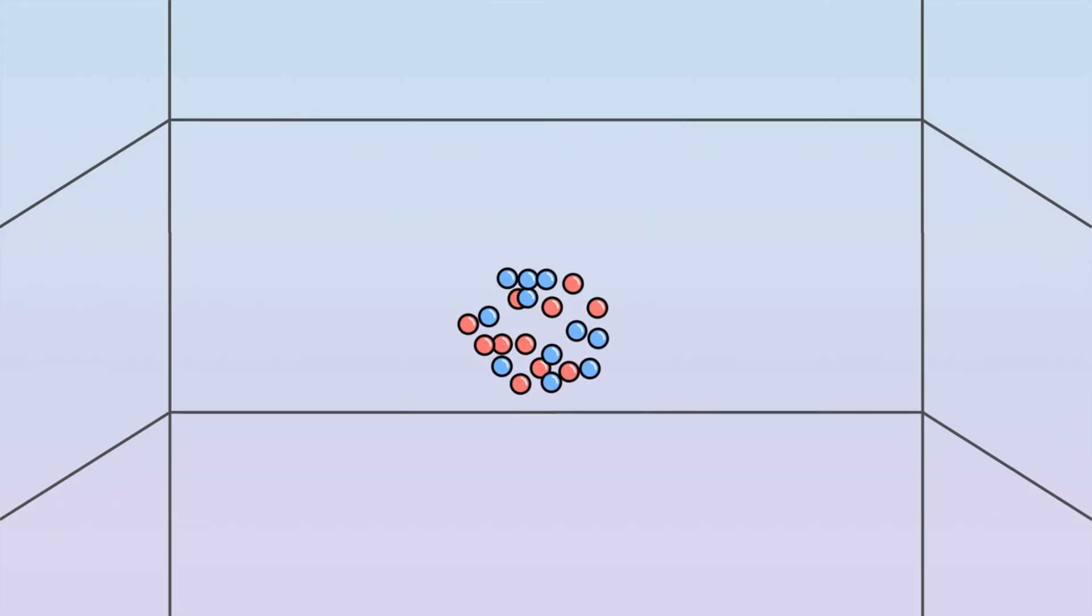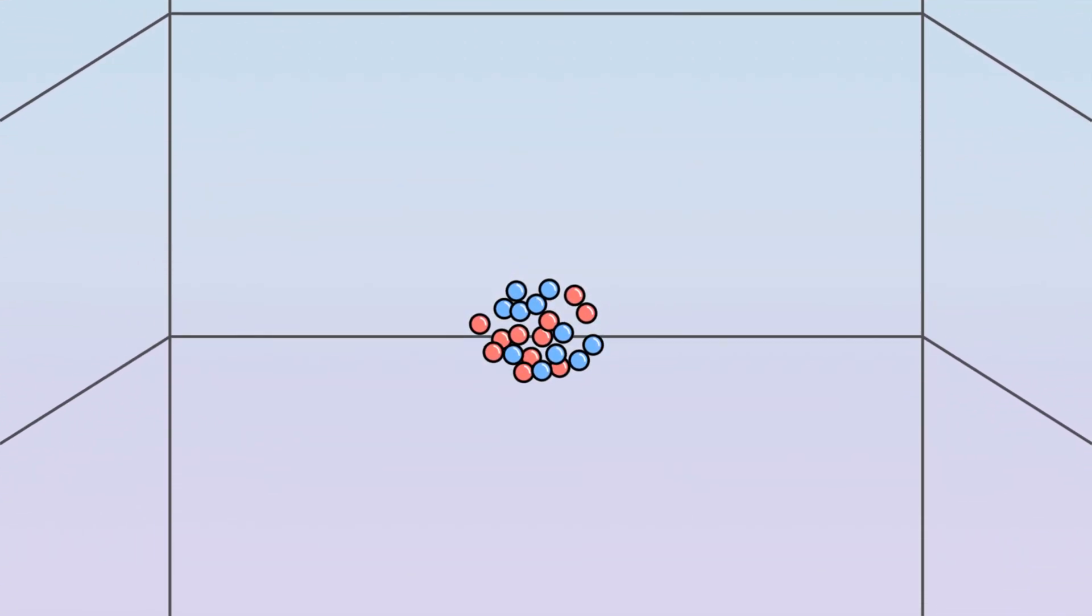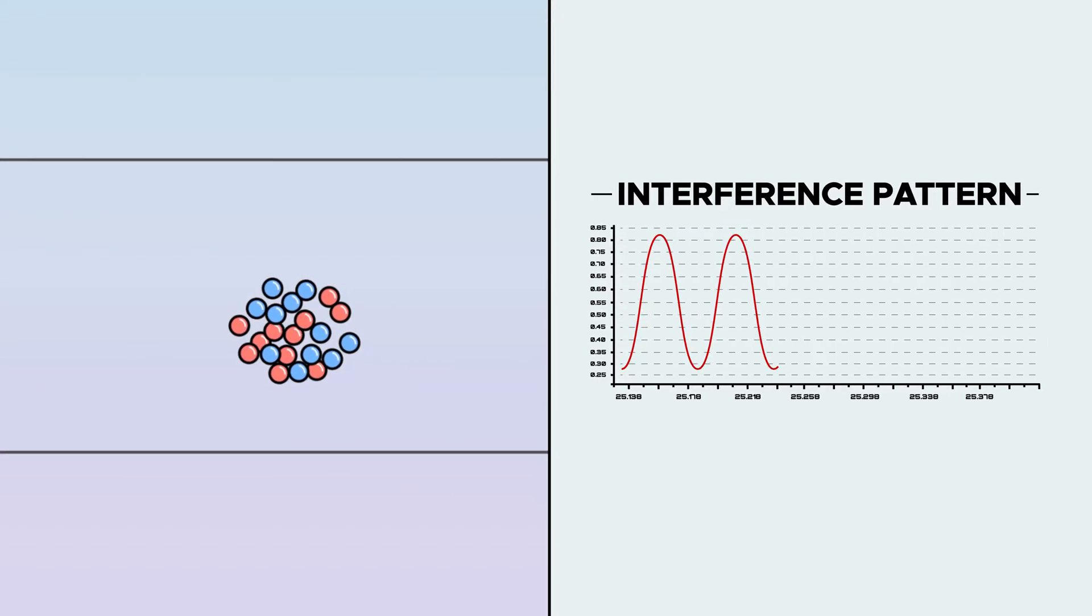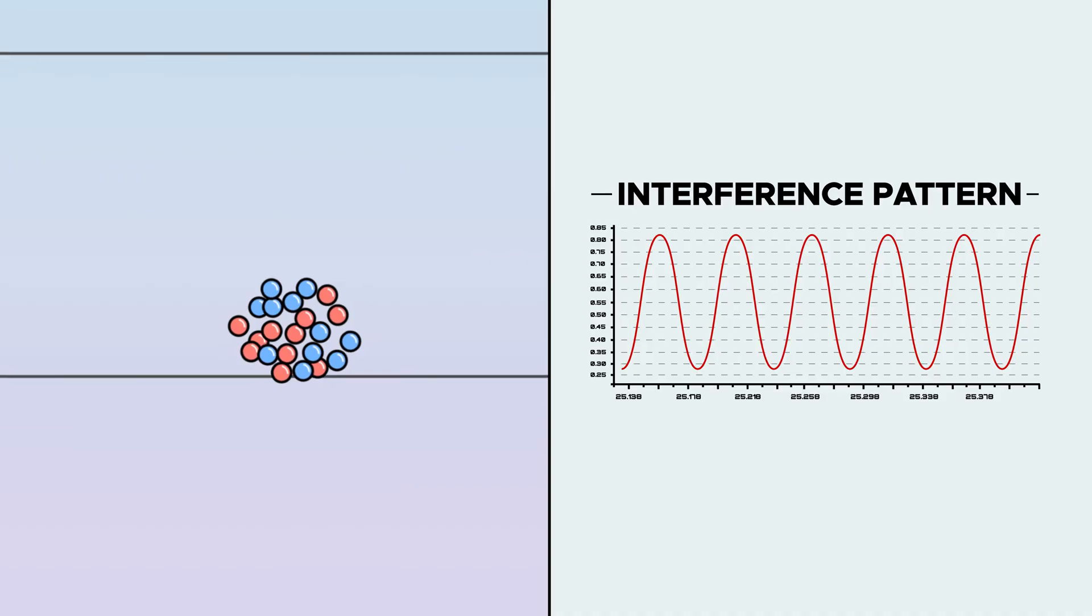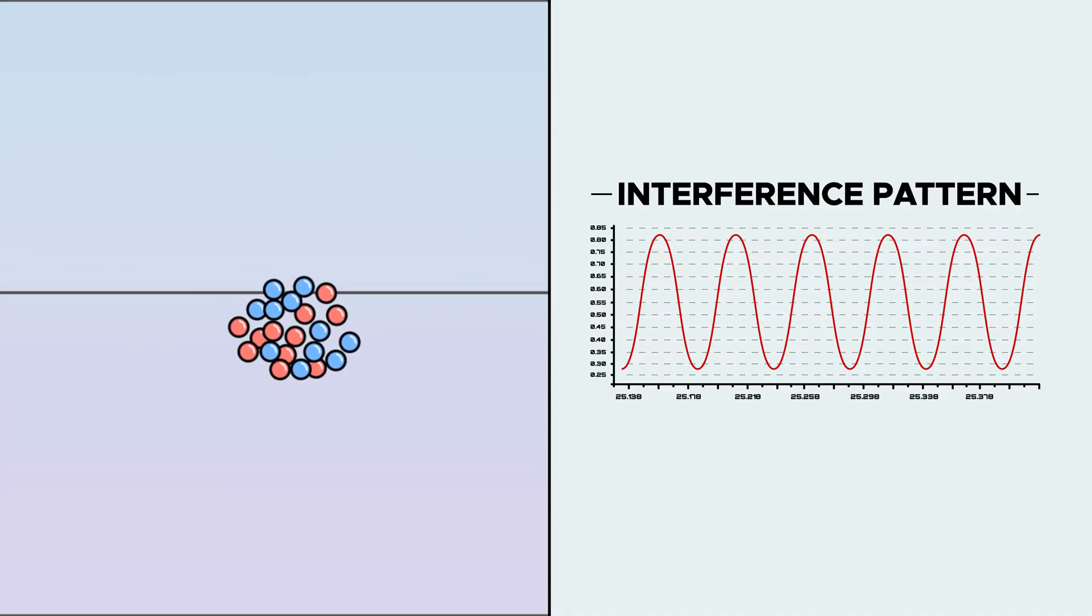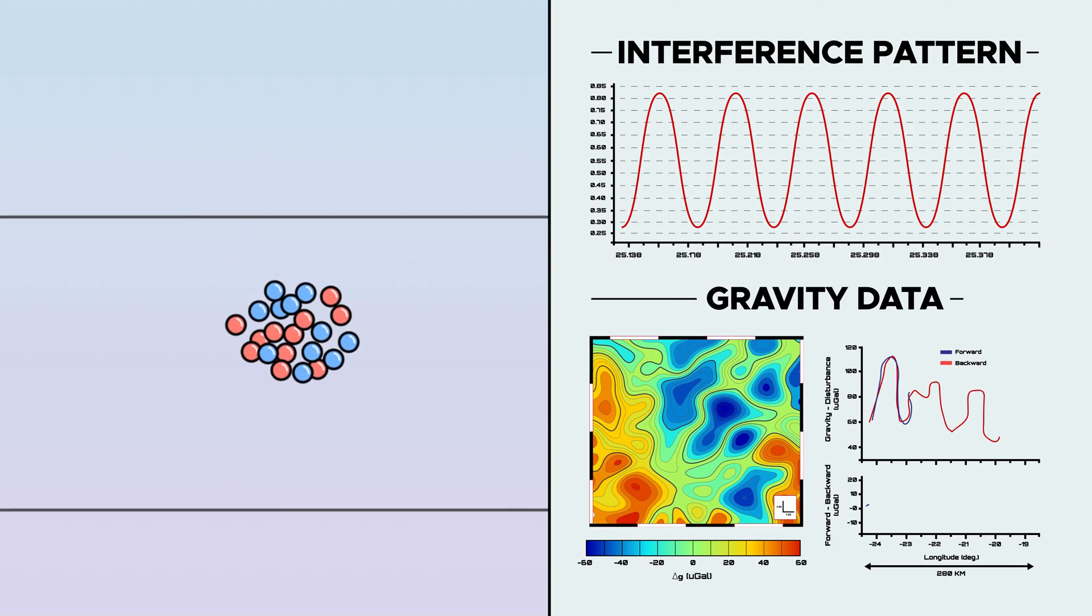And towards the end, one last pulse recombines the clouds into one. Upon recombination, an interference pattern is generated due to the external forces that have been acting on the two clouds of atoms. This interference pattern is analyzed to provide gravity data.